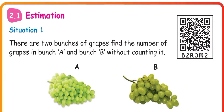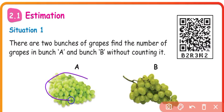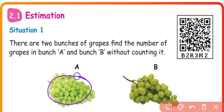Estimation means Approximation. The approximation gives an estimate. See Situation 1: there are 2 bunches of grapes. Find the number of grapes in Bunch A and Bunch B without counting them. This is estimation — just guess the approximate number of grapes. The approximation says the estimate is 50 or 35.